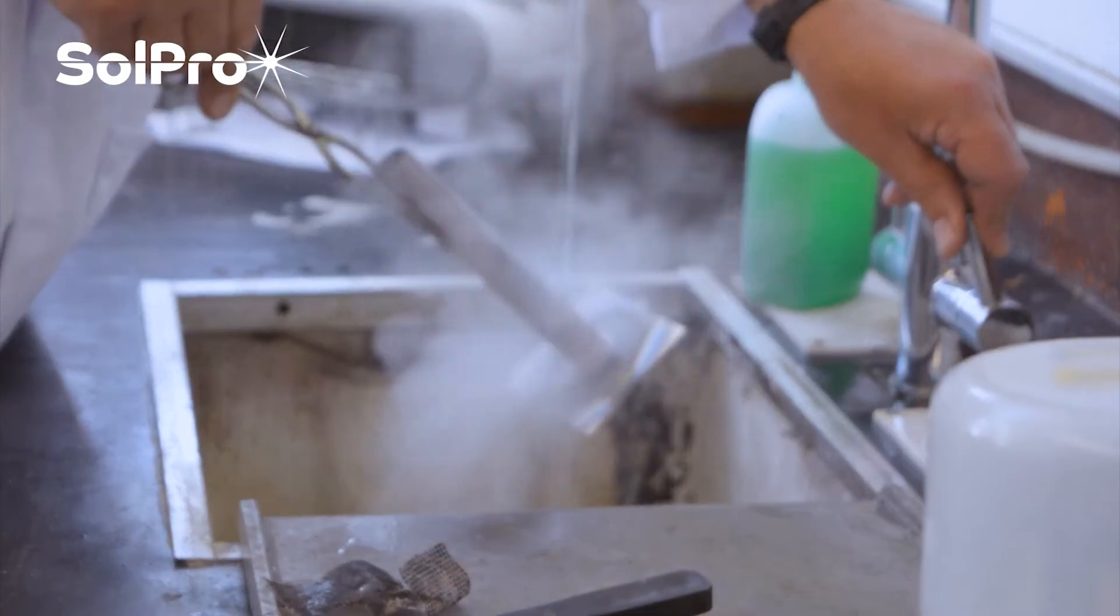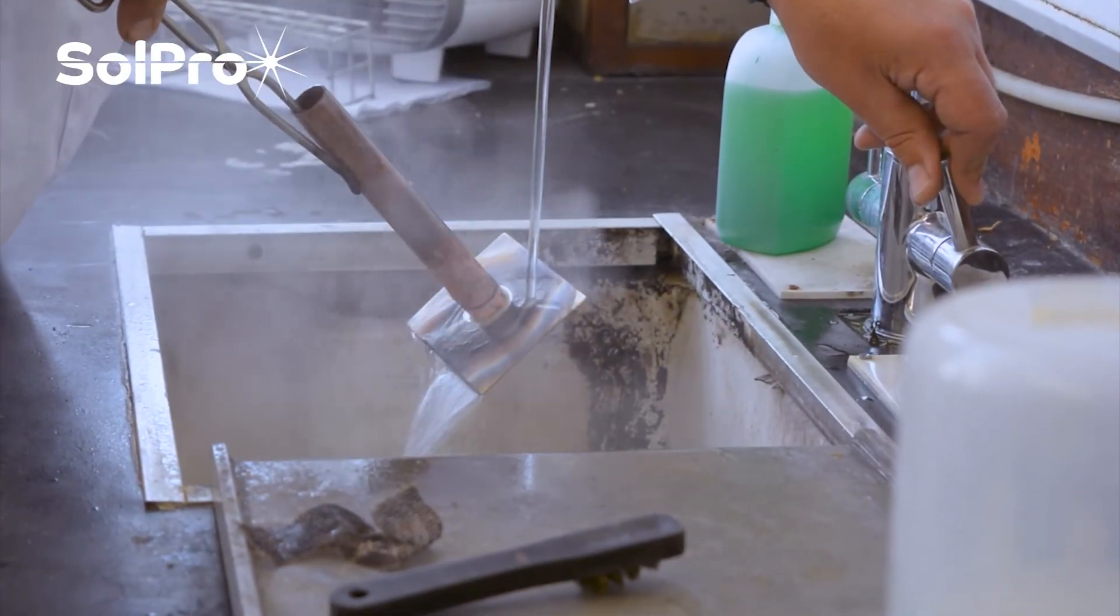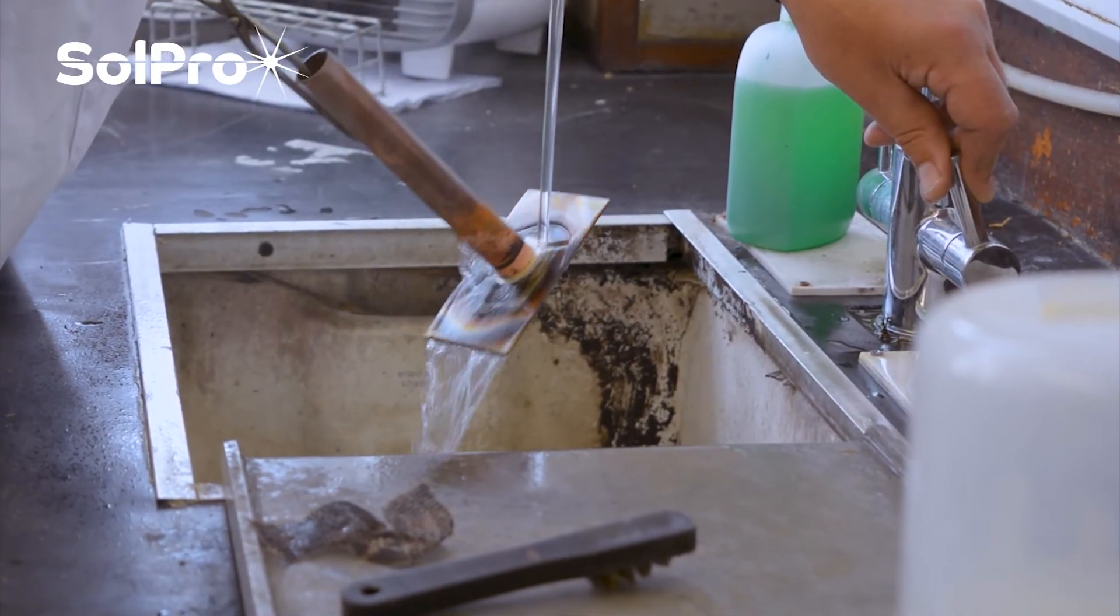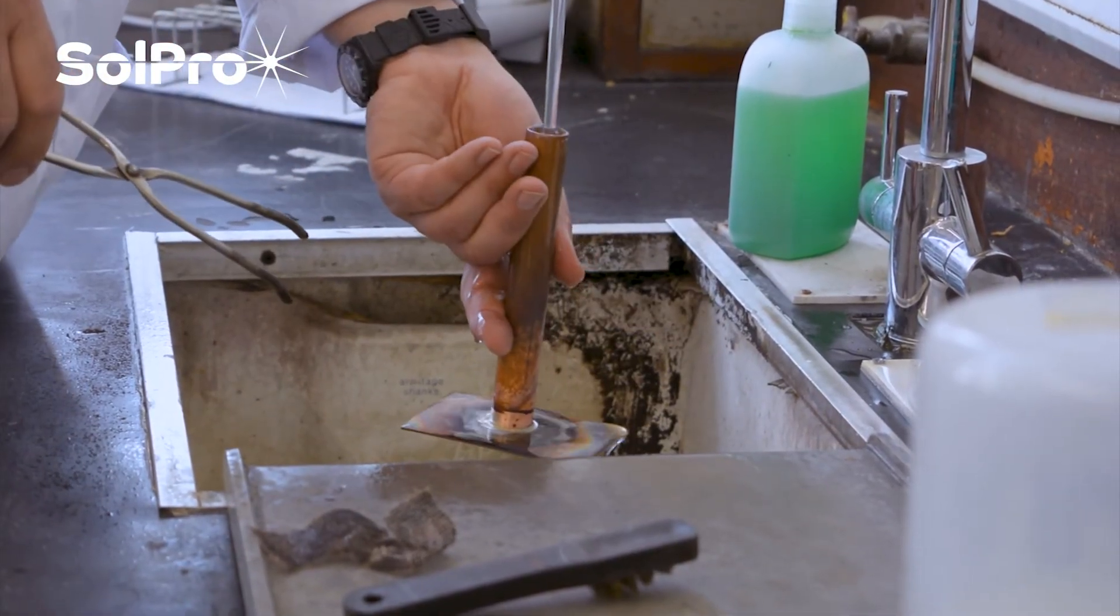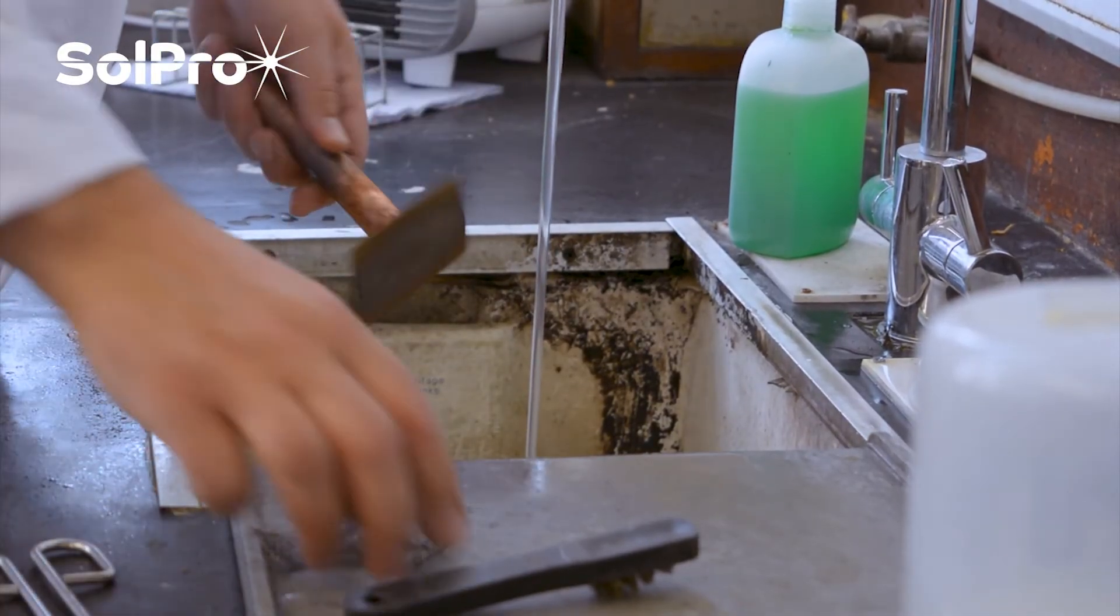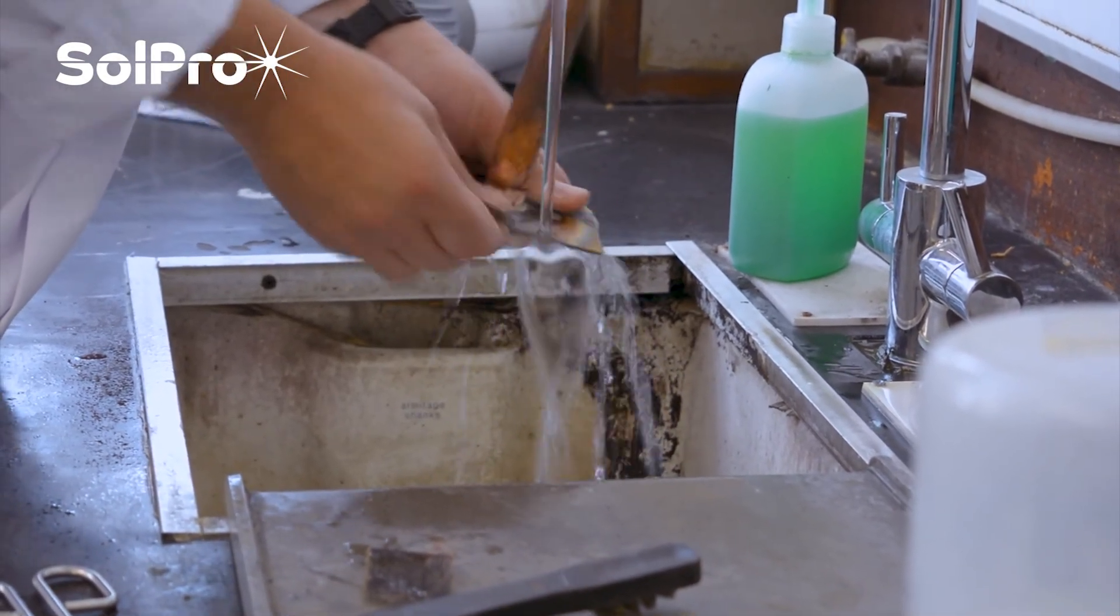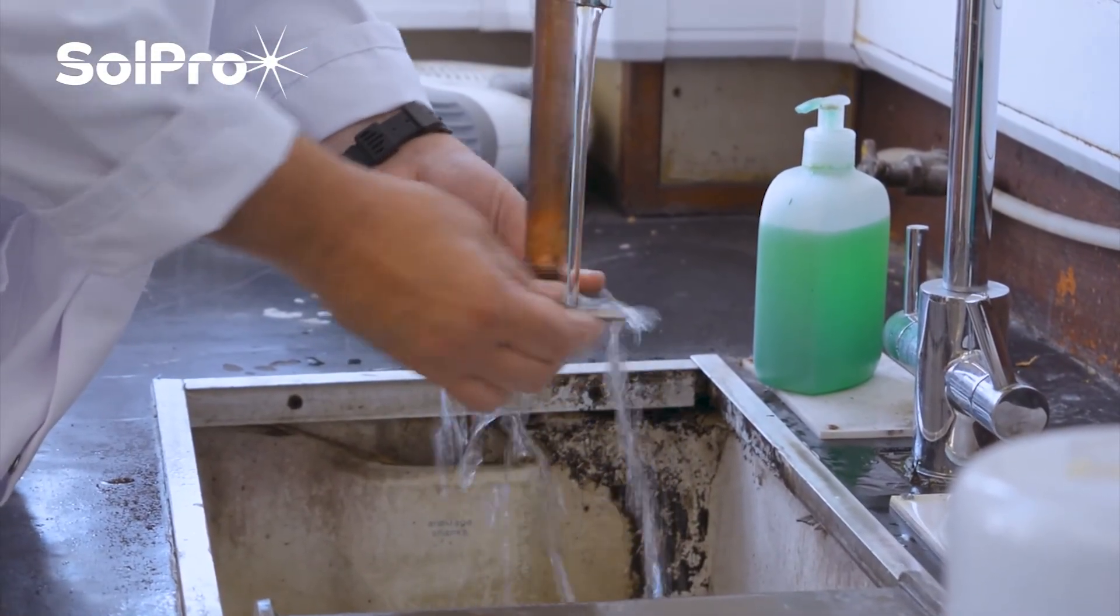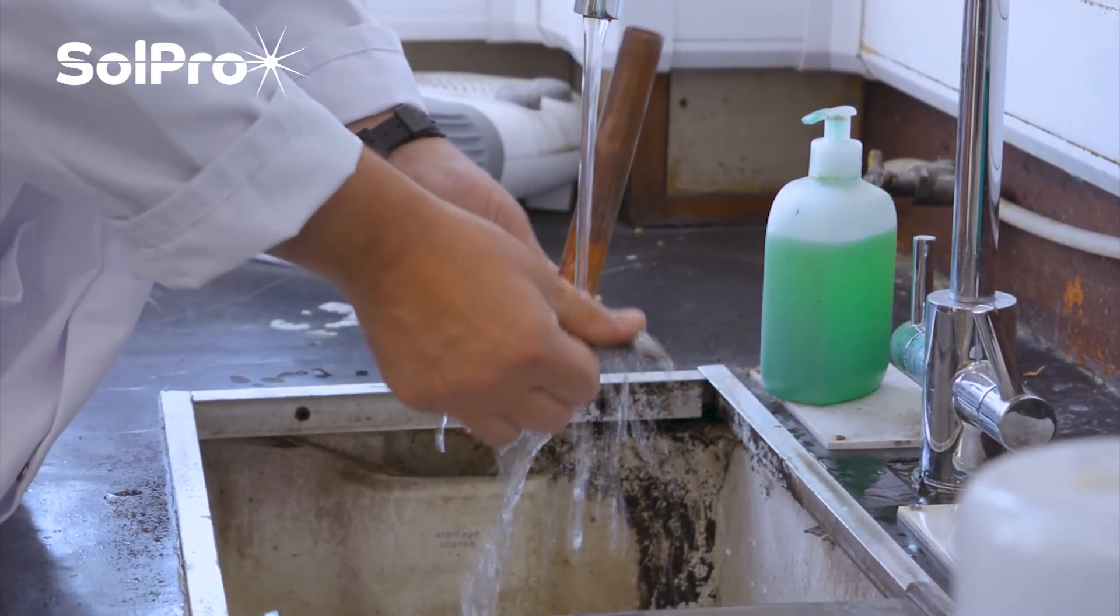Then we're just running this under a tap just to cool it down so we can handle it. It's always a good test you've done it right when the water stays in and doesn't come out through the gap. Then what we're going to do is clean any old flux residue. The flux is a chemical cleaner, and if it's left on will actually start to corrode and eat away at the metal.